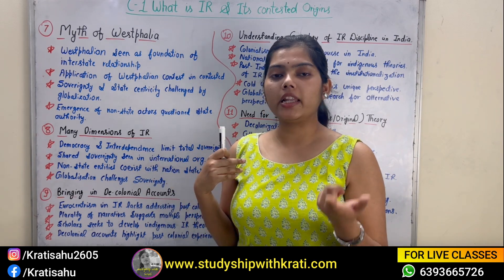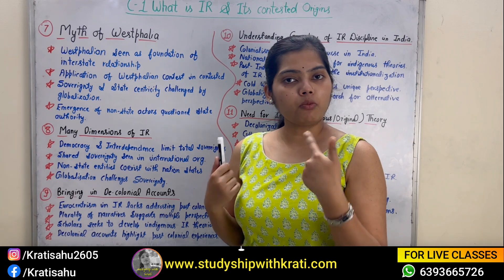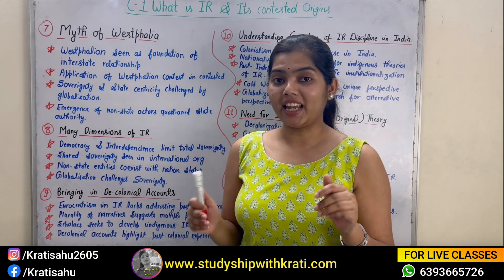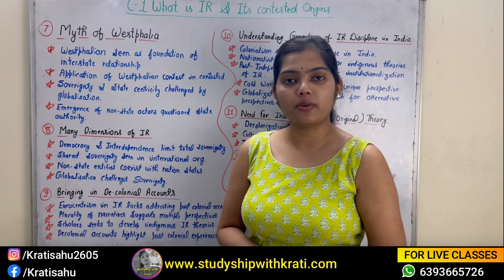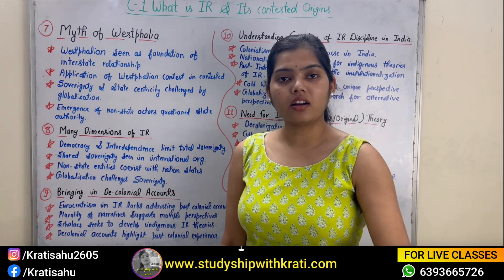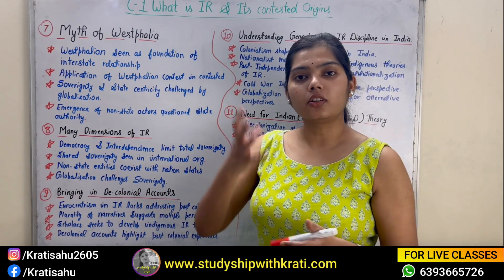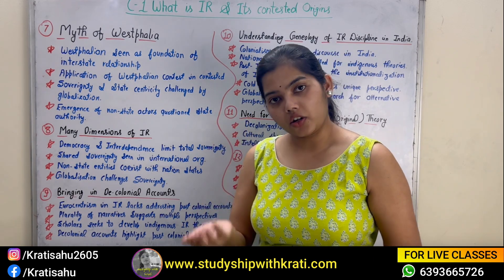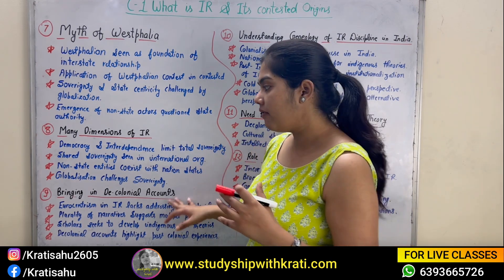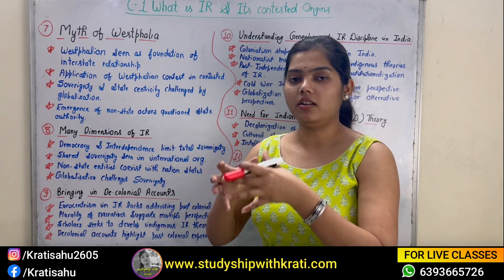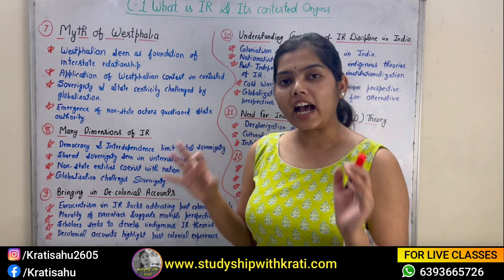Shared sovereignty is seen in international organizations. For example, there was a trade war between China and the USA. China restricted connections and the rest of the countries became dependent on China and the USA. So we share sovereignty - if someone acts a certain way, others can respond in kind. Non-state entities like domestic companies, NGOs, international NGOs, and embassies all co-exist within one nation's boundary. Globalization therefore challenges sovereignty - we no longer have total sovereignty.